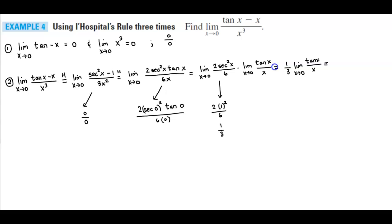Since tangent x approaches zero and x approaches zero, we apply L'Hôpital's rule a third time. We get one third times the limit as x approaches zero of secant squared x over one. This simplifies to one third times one squared over one, giving us one third as our final limit.